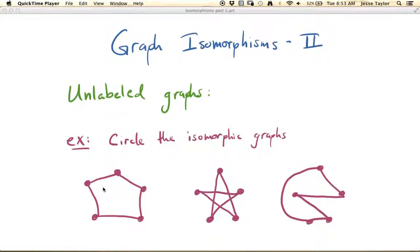So we just want to do a couple of quick examples here. So we'll start with this one. So circle the isomorphic graphs. So we're trying to determine which, if any of these, are isomorphic.